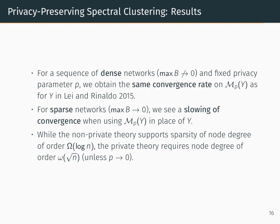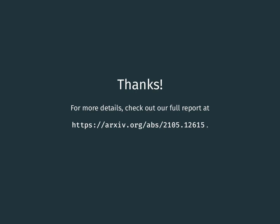We'll summarize these results in terms of two special cases. The first case is when the largest entry in B is bounded away from 0. So for a sequence of dense networks with a fixed privacy parameter p, the results from these private methods actually give us the same convergence rate as what we would see using the true network in the original non-private theory. The second case is the case of sparse networks, where all the entries in B shrink towards 0 as n goes to infinity. While we are able to obtain consistent estimates of community membership using these private methods on sparse networks, we do see this coming at a cost — the rate of convergence is slower when using the private methods, and this also limits the extent of sparsity that we can handle under privacy. For more details, please feel free to check out our full report on arXiv. Thank you.